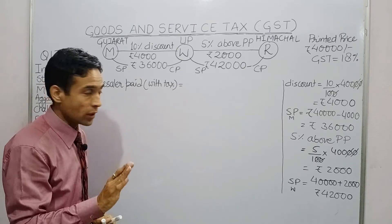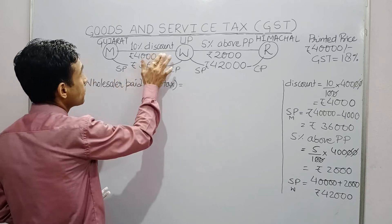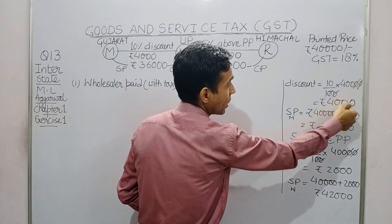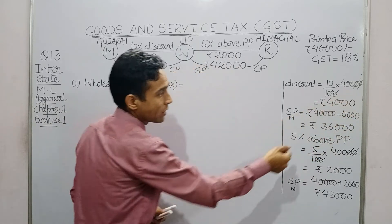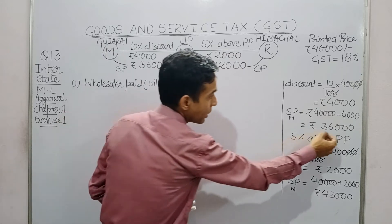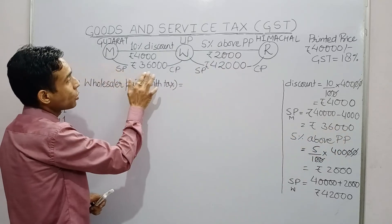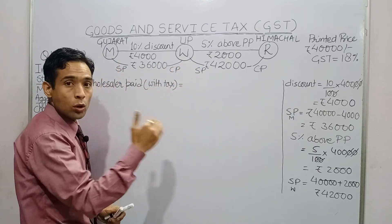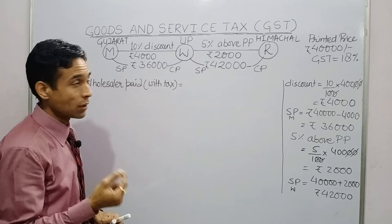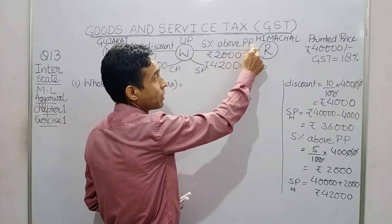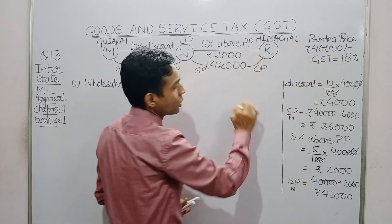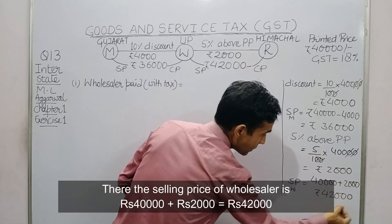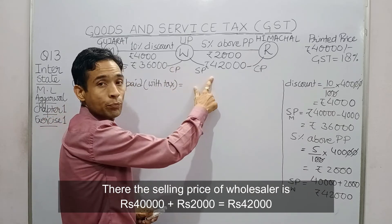There is a 10 percent discount from manufacturer to wholesaler. Calculating 10 percent of ₹40,000 gives ₹4,000 discount, so the selling price of the manufacturer — which is also the cost price of the wholesaler — is ₹36,000. The wholesaler further raises the price by 5 percent above the printed price of ₹40,000. 5 percent of ₹40,000 is ₹2,000, so the wholesaler sells to the retailer at ₹42,000. This is the cost price for the retailer.